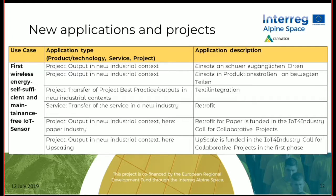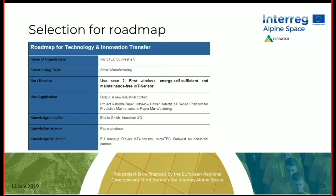We prepared three potential new applications and products in our roadmap. This is just the header that you also know from your road mapping activities. You can see it's now a project called Retrofit for Paper, which was developed from this use case.